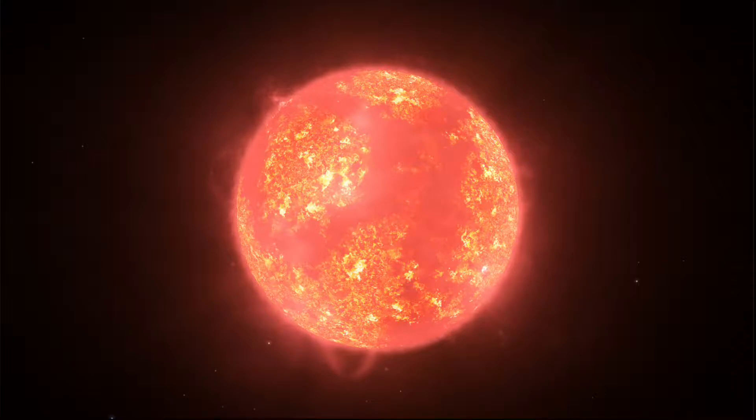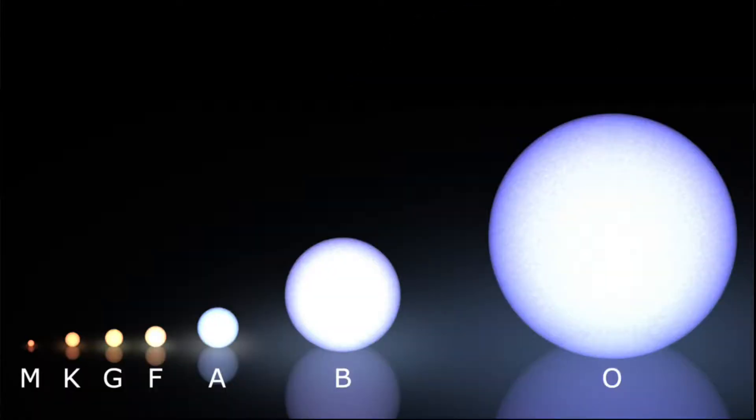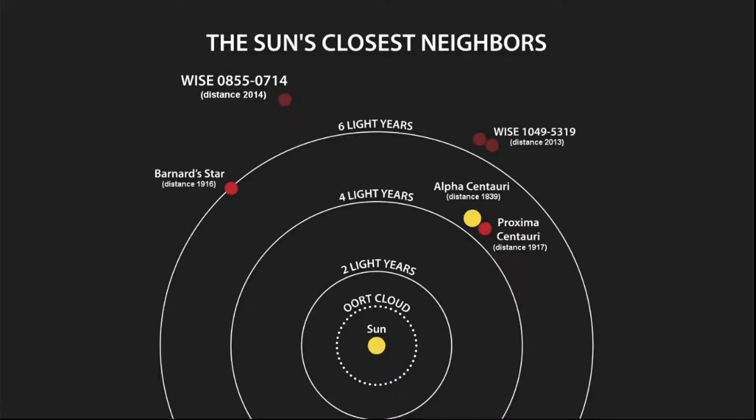Proxima Centauri has one-eighth the mass of the Sun. That makes it a red dwarf star. It is an M on the stellar classification scale while the Sun is a G. It is 4.243 light-years away from the Earth.